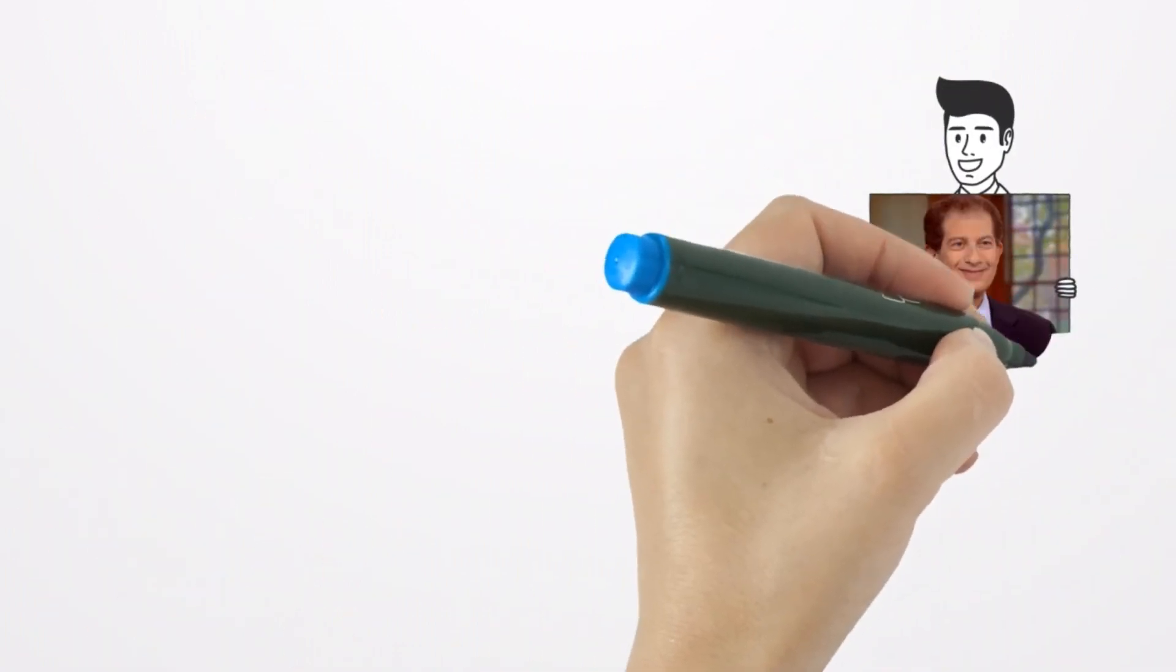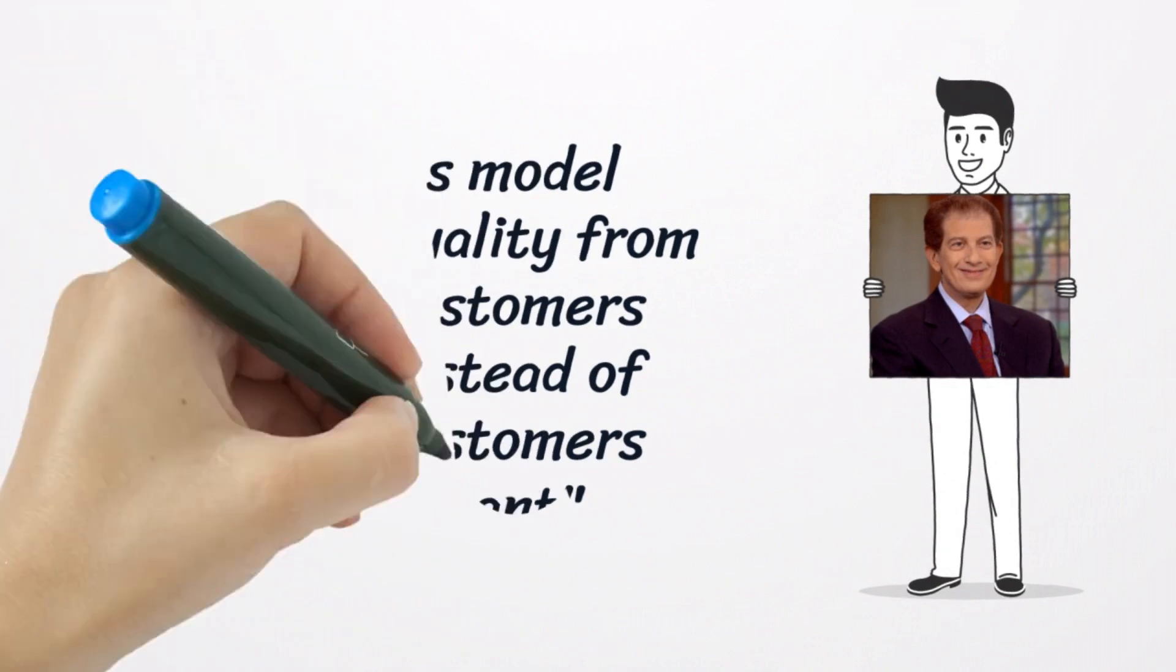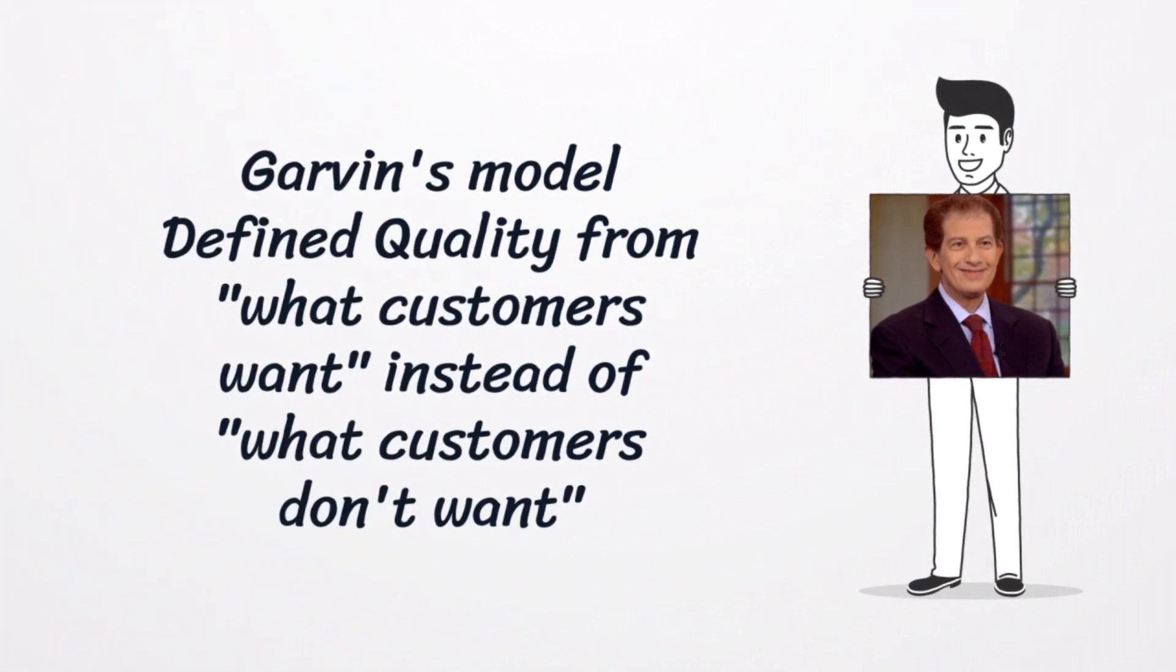Garvin published his model in the Harvard Business Review in 1987, a time when U.S. consumers were no longer confident about the quality of U.S.-made products. He felt that traditional quality management methods were flawed because they aimed to protect customers from what they don't want, by avoiding faults and delays, for example.